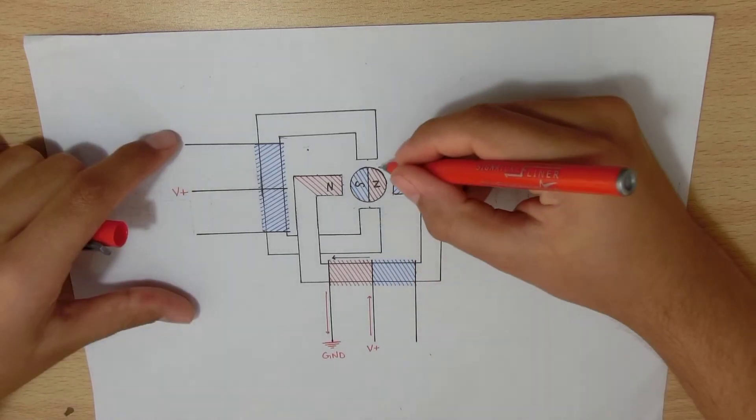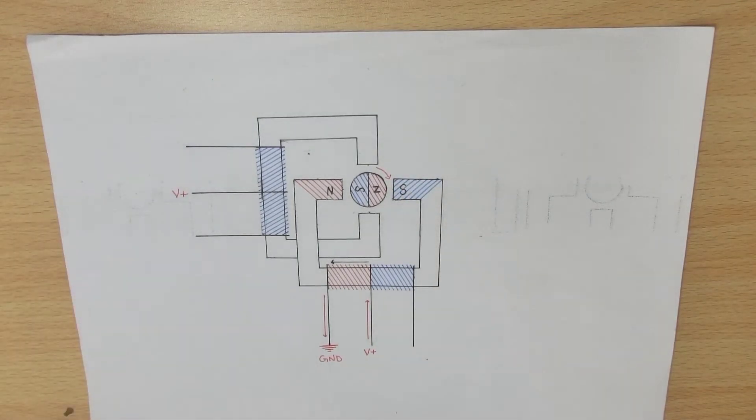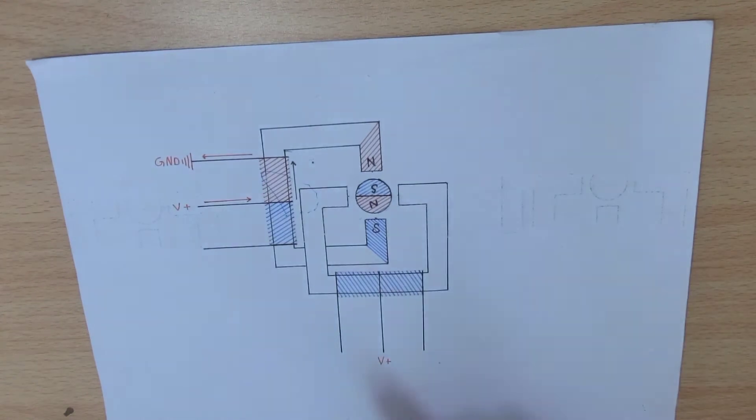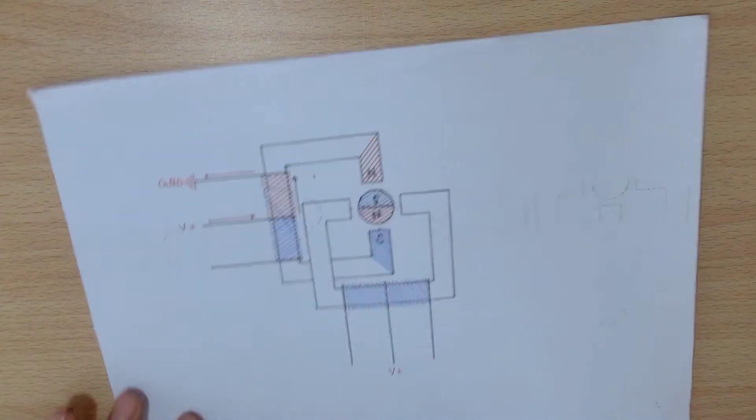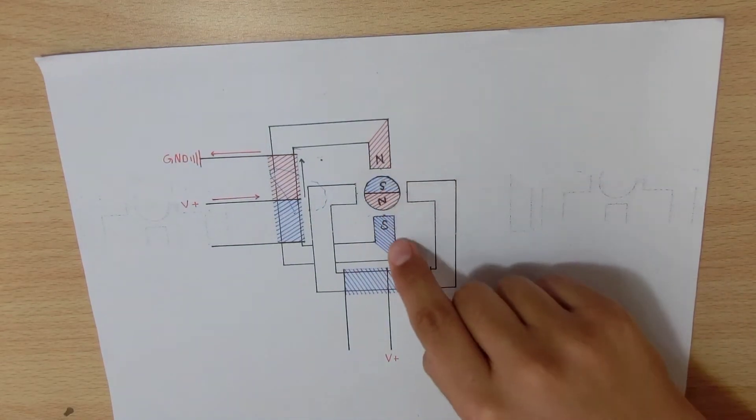The rotor rotates clockwise so that the opposite poles are facing each other. In the next step, we attach A1 to ground. The current flows in the coil and creates a north pole here and a south pole here.